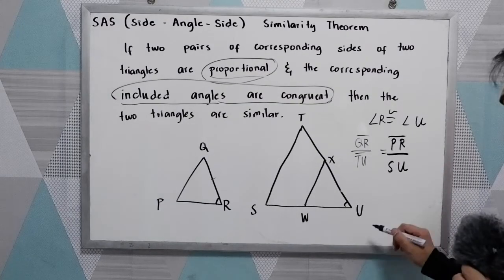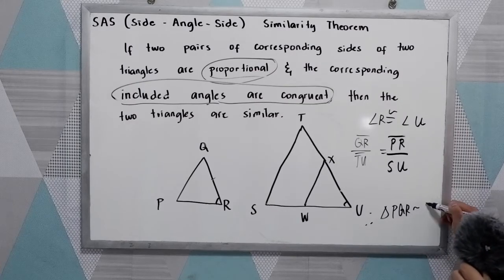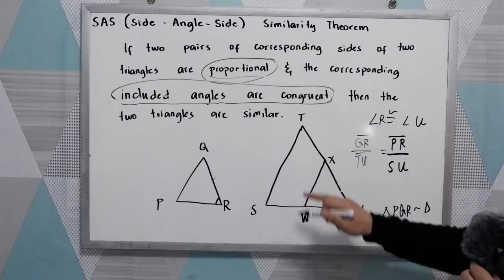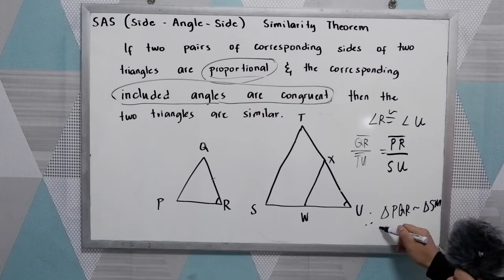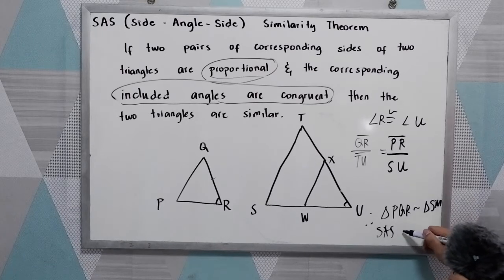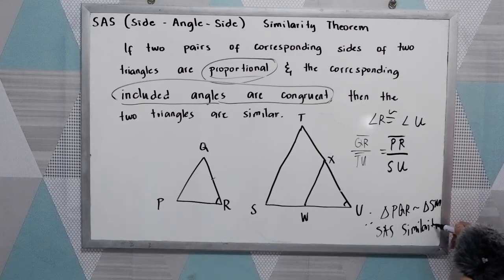So if that's the case, we can conclude that Triangle PQR is similar to Triangle STU by the SAS Similarity Theorem.